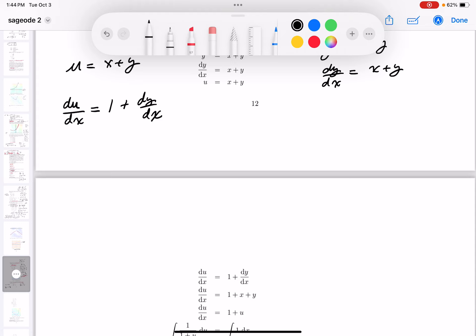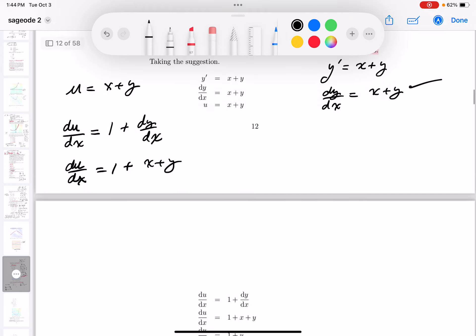I think I know what dy/dx is, right? Let me write this over here. So du/dx equals 1 plus, well, dy/dx is just x plus y. That's what dy/dx is, it's right over here. And then what did we say? We said, let u equal x plus y. So I guess I could write that down now. So du/dx equals 1 plus, well, x plus y is just u.